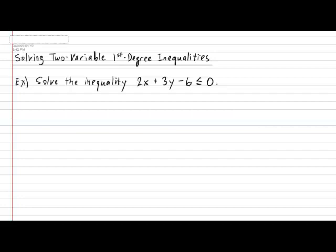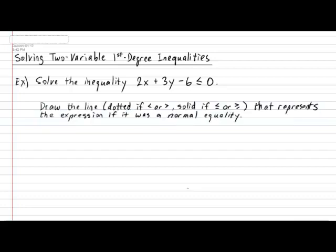The answer to this lies in a three-step procedure. The first step is: we have to draw a line that represents the expression if it was just a normal equality. So in this example, we want to draw the line that represents 2x plus 3y minus 6 equal to 0 — all combinations of x and y that cause the expression to exactly equal 0. This line will be a dotted line if it was strictly an inequality, and solid if there is an equality involved. Then the next question is: how do we find combinations of x and y that solve not just the equality but the inequality?